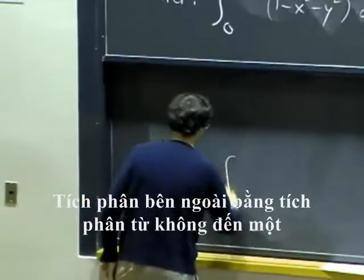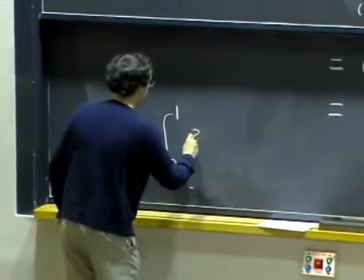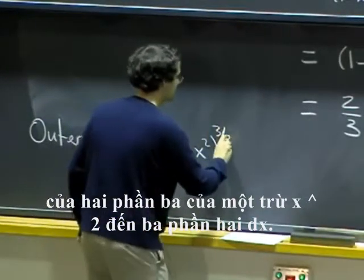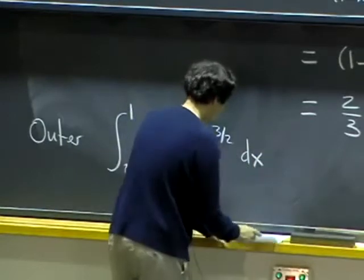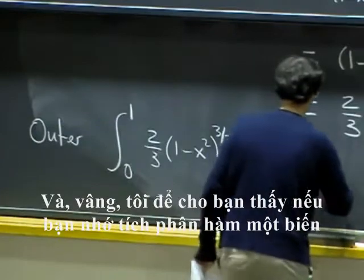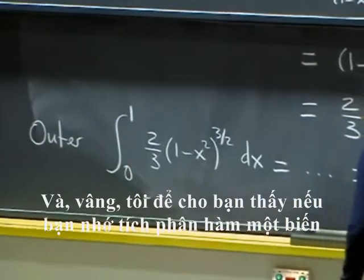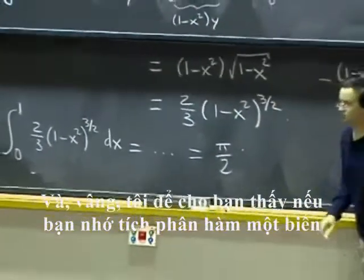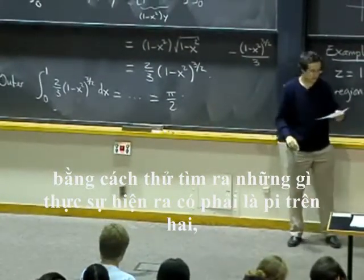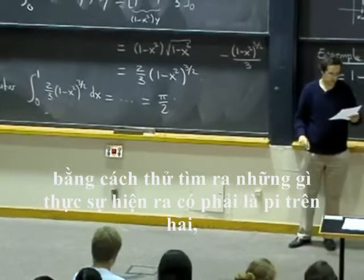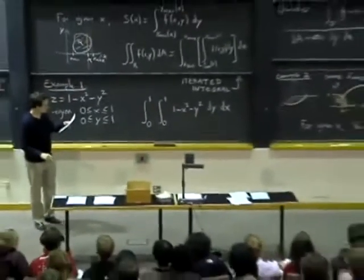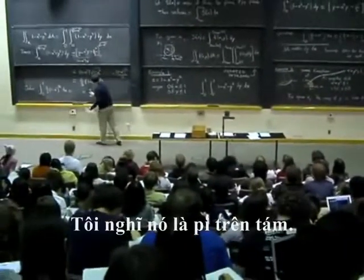The outer integral is integral from zero to one of two-thirds of one minus x squared to the three halves dx. And, well, I'll let you see if you remember single-variable integrals by trying to figure out how this actually comes out to be. Is it pi over two or pi over eight, actually? I think it's pi over eight.